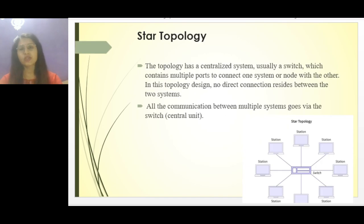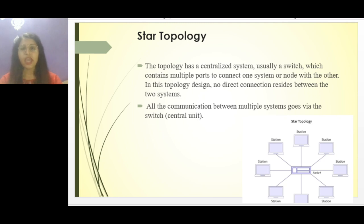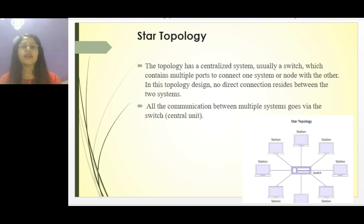We'll start with star topology. What do you understand by the word star topology? In this topology there is a centralized system — usually a switch — which contains multiple ports, and those ports are connected to each of the systems. There will be no direct connection between computers; they are connected to one another via the switch. So the switch acts as the central unit, and all other stations are connected to it.